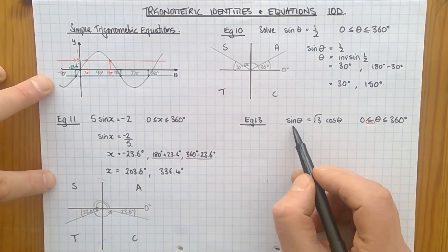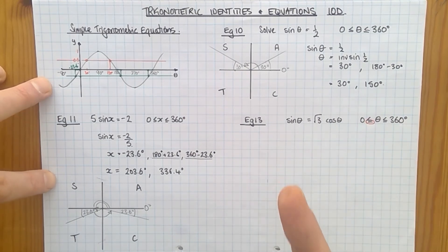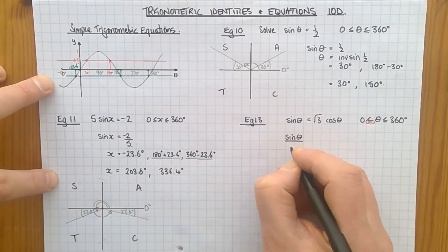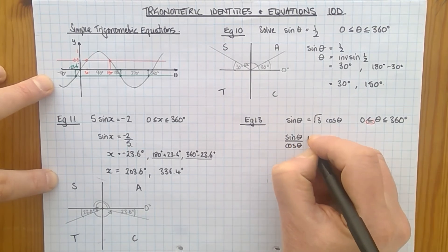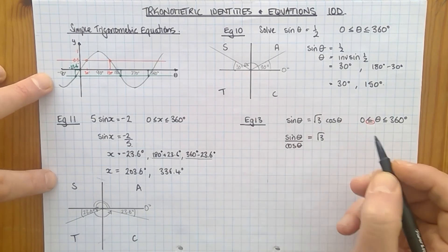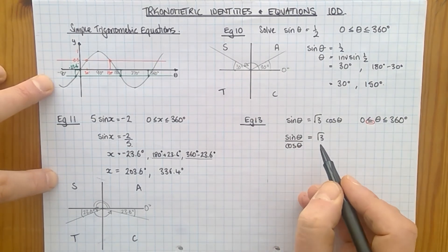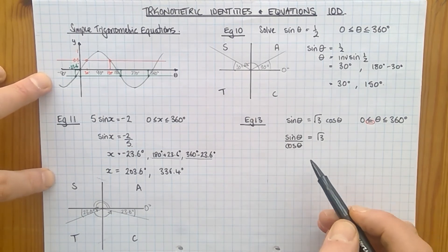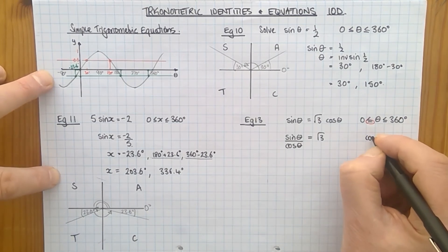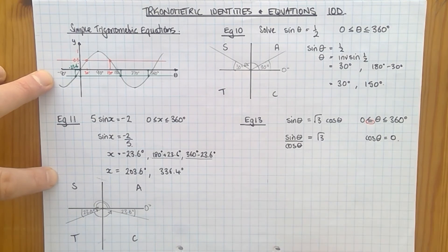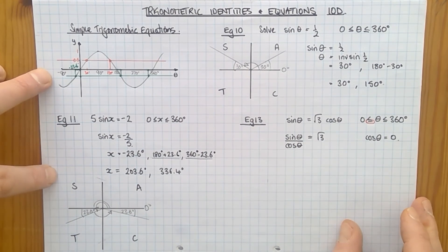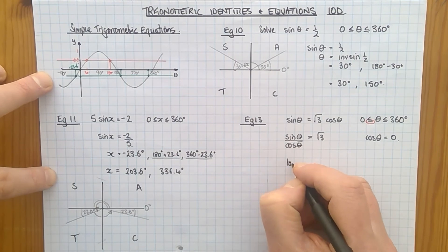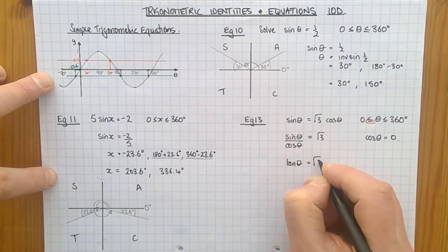Now the only way, or one of the ways we know to combine sine and cos to get a single trig function is to do sine divided by cos. So divide both sides by cos. Sine theta divided by cos theta is root 3 times cos divided by cos, which is just 1. Now I can do that if cos theta is not 0. So we've got to watch out for cos theta. Anyway, sine theta over cos theta is tan theta. So tan theta is root 3.